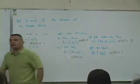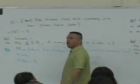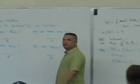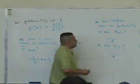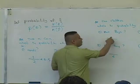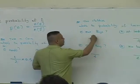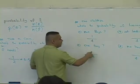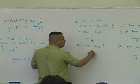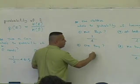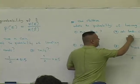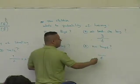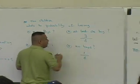We already determined those numerators. What are they? This one? One. Two. Three. One.